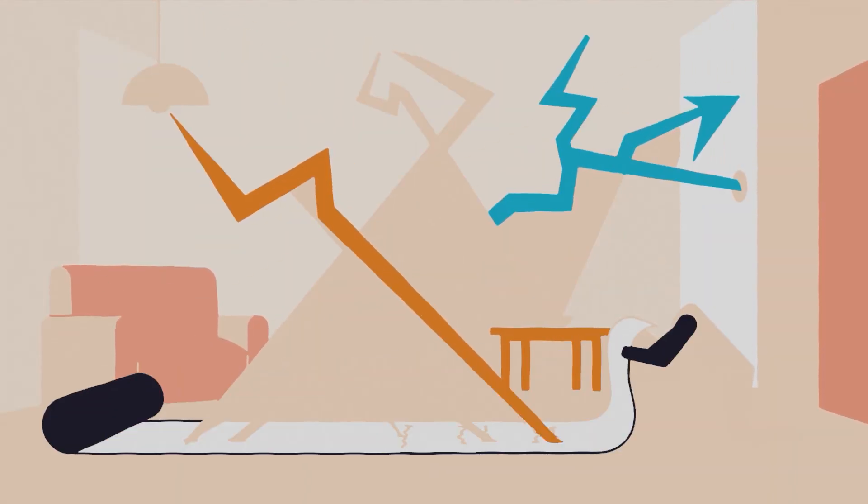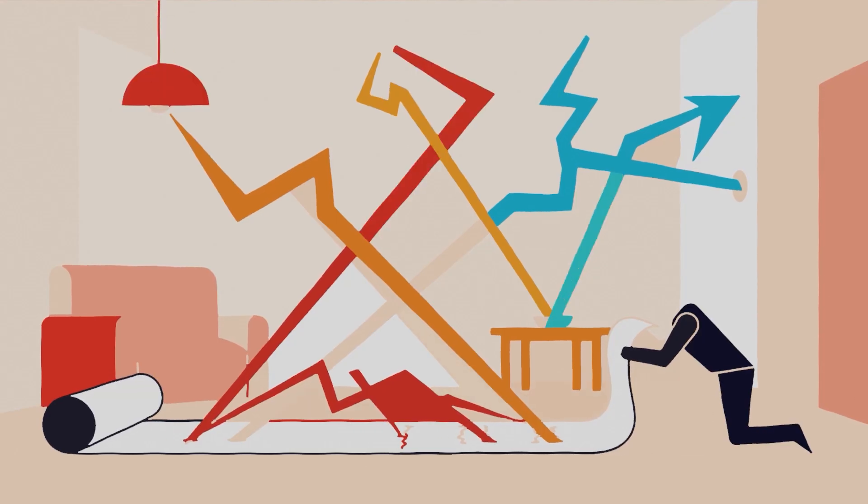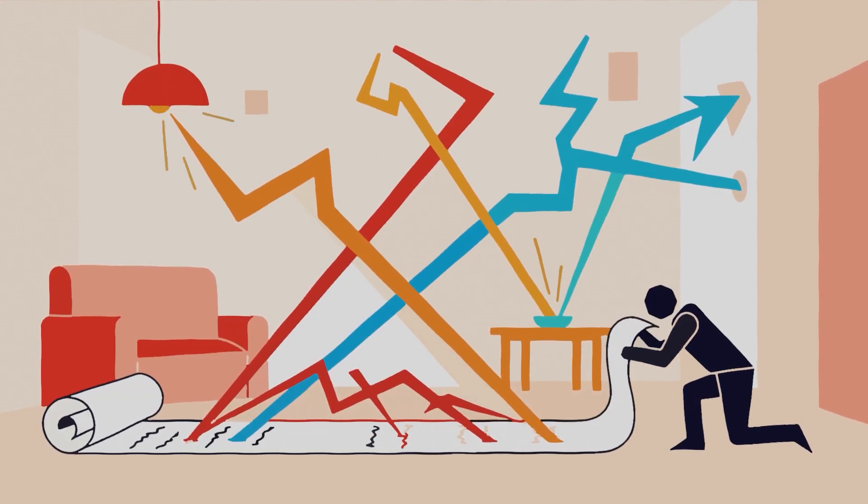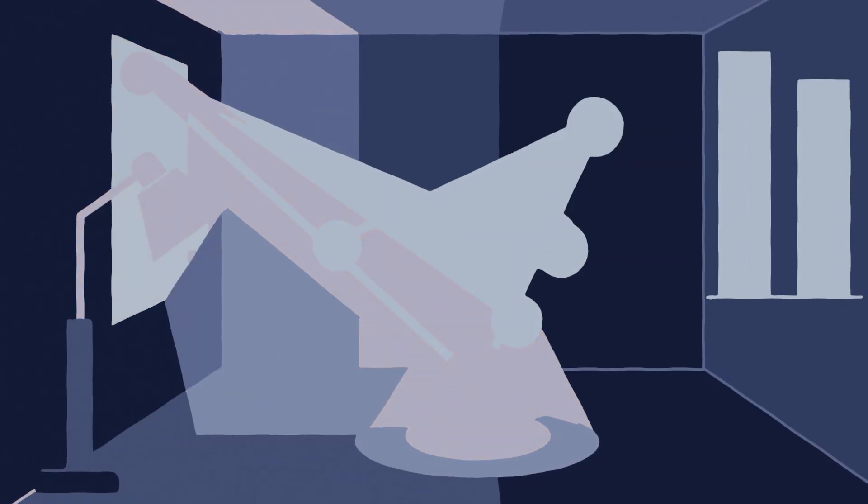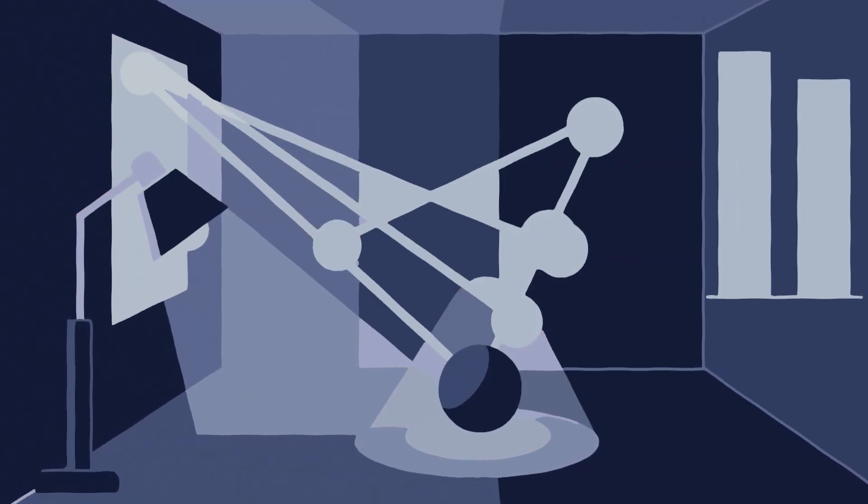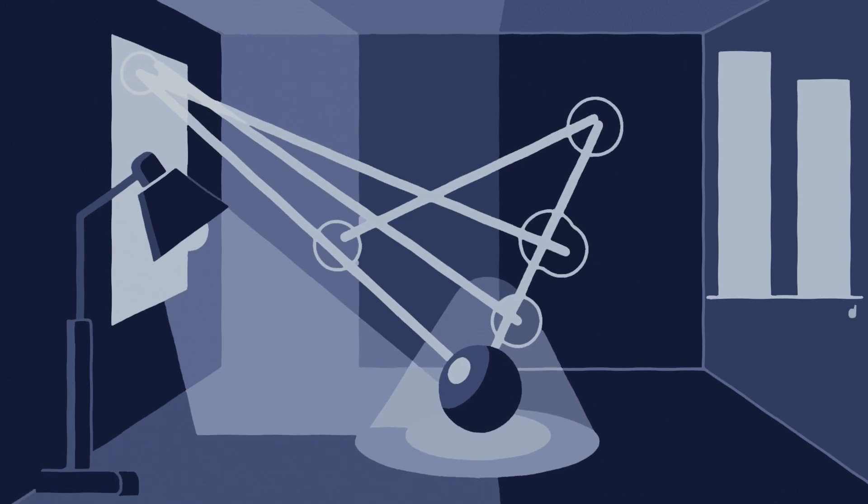Imagine trying to enumerate every path light could take through a room. You'd probably die of old age before you finished listing them. But if you randomly explore just a tiny percentage of those paths and average their contributions, you get something remarkably close to reality.